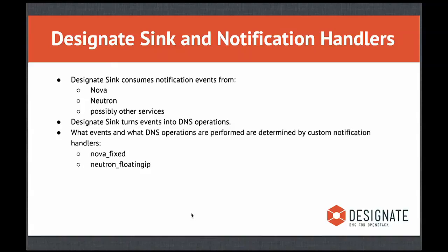Designate ships with two custom notification handlers that are, as examples, a little brain dead — they're just there as examples. Both of them have a hard-coded domain, and they create A records. One is for Nova when Nova events occur, and one is for Neutron when floating IP events occur — it'll delete that A record as well. They weren't written for you to use in production per se; they were written as an example for you to take to the next step for your business.